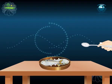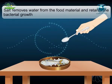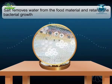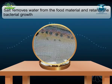Common salt is used to preserve meat and fish. High concentration of salt removes water from the food material and retards bacterial growth, which prevents food spoilage. So meat and fish are covered with dry salt to check the growth of bacteria.